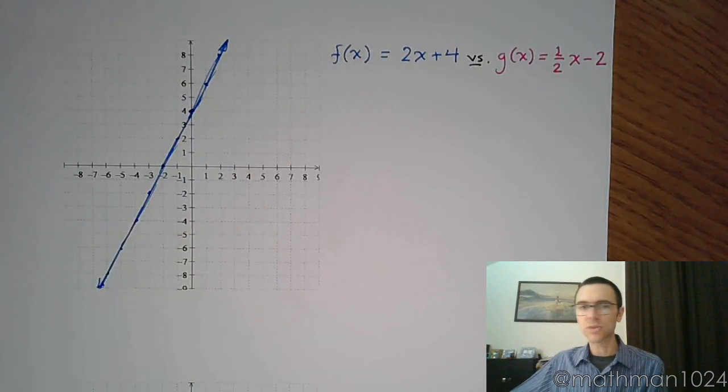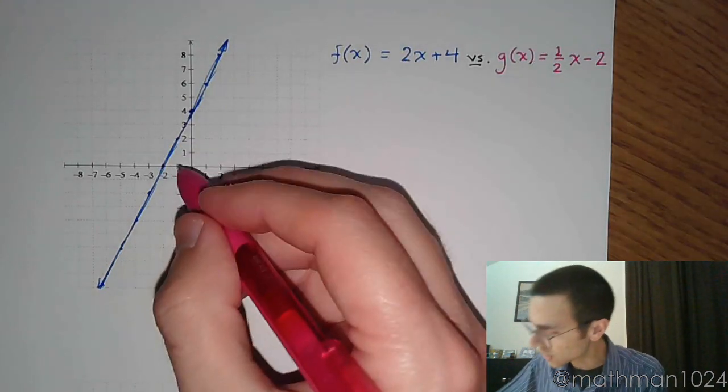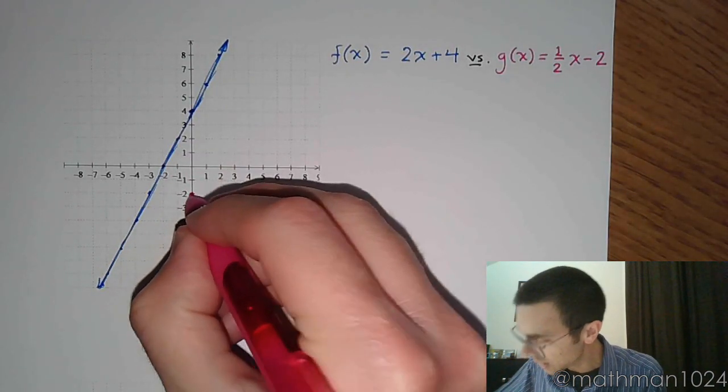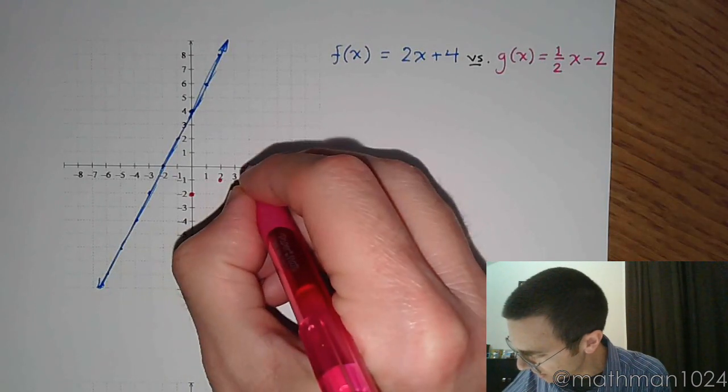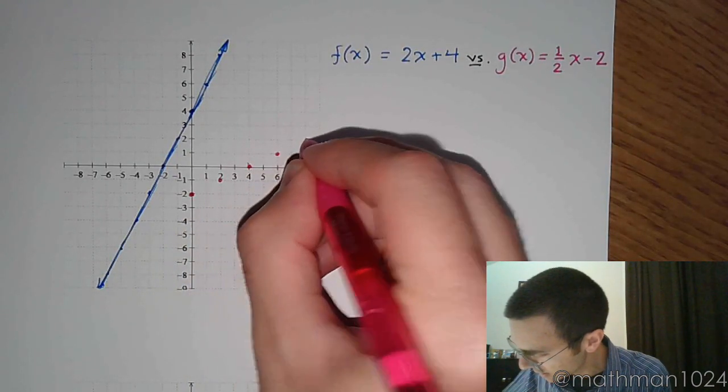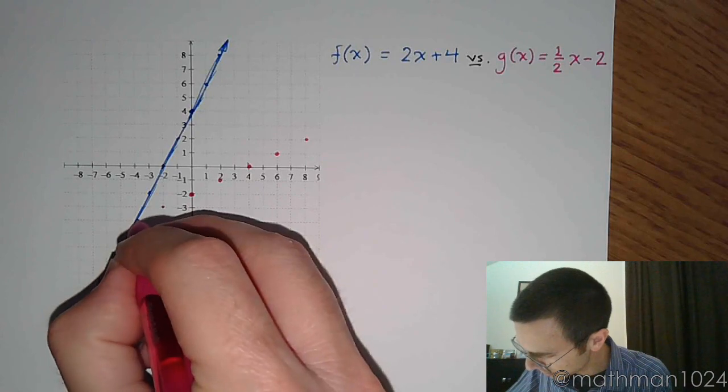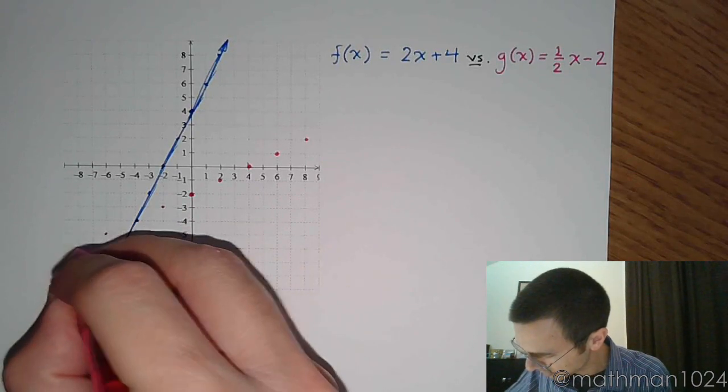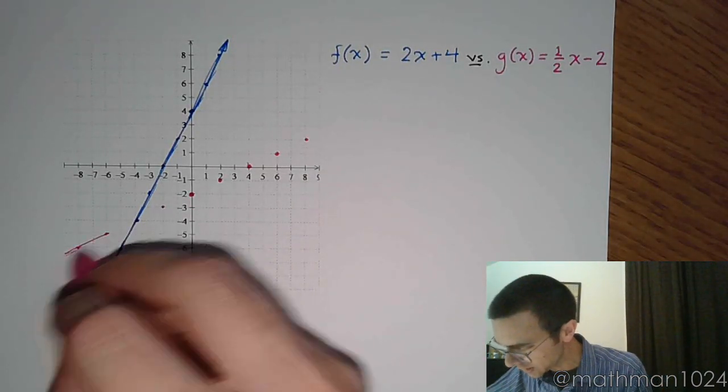Now, g of x is 1 half x minus 2, so that's gonna start down here at negative 2 with a slope of positive 1 half. So he is going to be this guy, and now let's connect these dots.